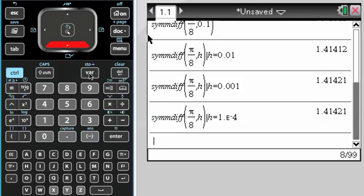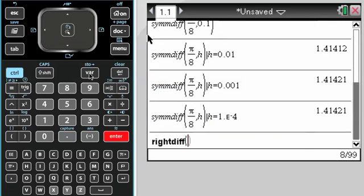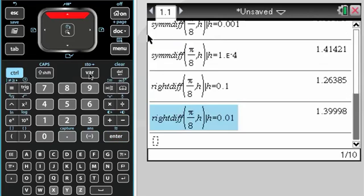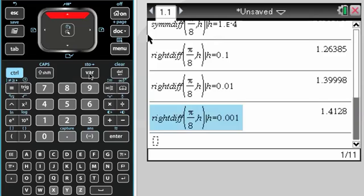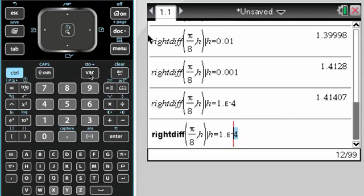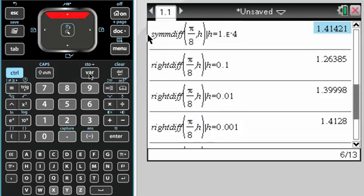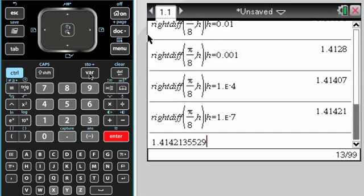Let's see what the right difference quotient gives me. Right difference, pi over 8 again, comma h, such that h equals 0.1, that's not very similar to what I had before. That's a little more similar. And now we're zeroing in. It takes a little more time here. If I go really small, I get that, which agrees with this at least to five decimal places. So you can see we're getting the same value out of each of them.